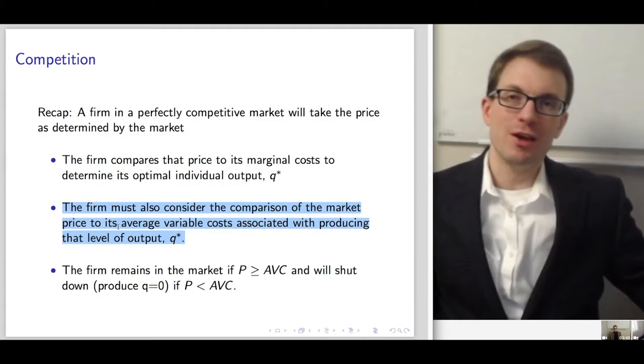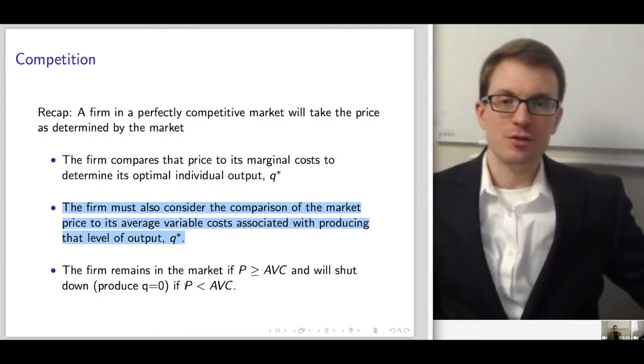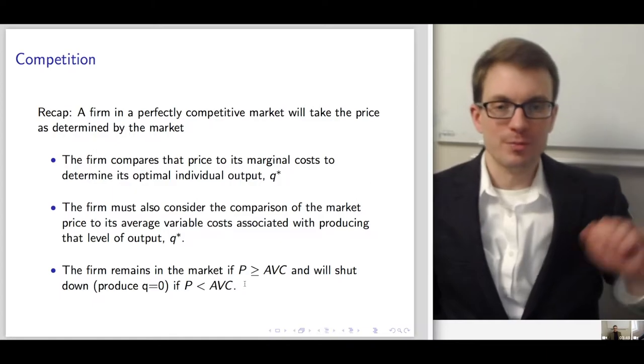It could turn out that the price is below average variable cost at the quantity that sets price equal to marginal cost. If that's the case, the firm would definitely want to shut down. Our shutdown rule is: the firm produces zero and shuts down in the short run, or exits in the long run, if the price is lower than average variable cost.